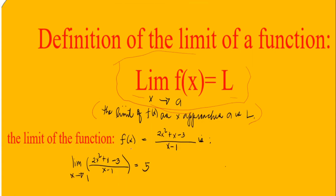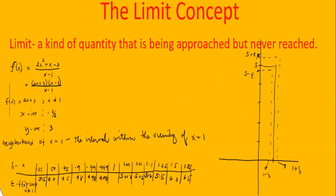For example, the limit of the function f of x equals (2x² + x − 3) / (x − 1) as x approaches to 1 is equal to 5. The zero of this function is at x equals 1, because substituting x equals 1 will make the denominator zero.